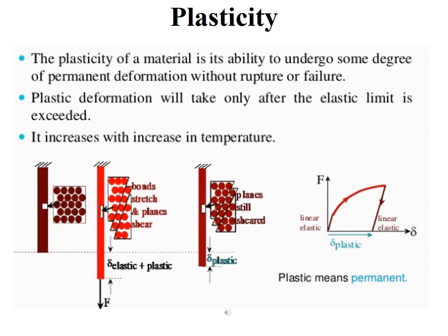Plasticity of a material is its ability to undergo some degree of permanent deformation without rupture or failure. Plastic deformation will take place only after the elastic limit is exceeded, and it increases with increase in temperature. In the figure, you can see the original length, and after applying a force the bonds stretch and atom positions change. After removal of that force, the material cannot return to its original shape — it has plasticity, not elasticity. There will be a small permanent change in length compared to the original material.